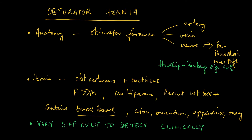When considering an obturator hernia, knowing the anatomy is really important. In the obturator foramen you've got an artery, a vein and a nerve. And if the nerve is compressed by a small bowel loop which is in the hernia, this can cause pain and paresthesia along the inner thigh. This is present in about 50% of patients and is known as the Hauschip-Romberg sign.